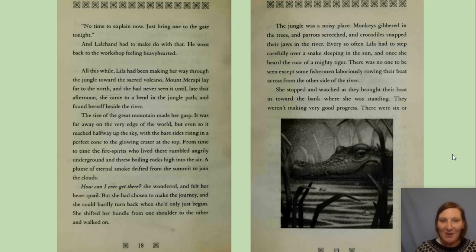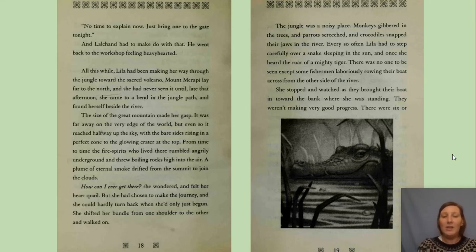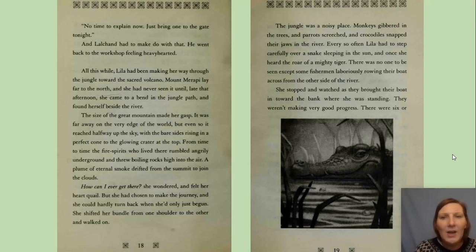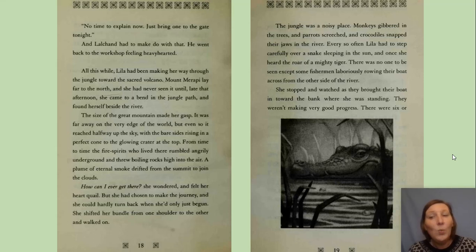From time to time, the fire spirits who lived there rumbled angrily underground and threw boiling rocks high into the air. A plume of eternal smoke drifted from the summit to join the clouds. 'How can I ever get there?' she wondered, and felt her heart quail. But she had been chosen to make the journey and she could hardly turn back when she'd only just begun. She shifted her bundle to the other shoulder and walked on. The jungle was a noisy place — monkeys gibbered in the trees, parrots screeched, and crocodiles snapped their jaws in the river. Every so often Lila had to step carefully over a snake sleeping in the sun, and once she heard the roar of a mighty tiger. There was no one to be seen except some fishermen laboriously rowing their boat across from the other side of the river. She stopped and watched as they brought their boat in toward the bank where she was standing — they weren't making very good progress.